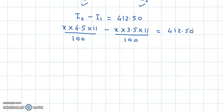Now let us calculate this. 4.5 × 11 = 49.5, and 3.5 × 11 = 38.5. So we have (49.5x - 38.5x)/100 = 412.50.